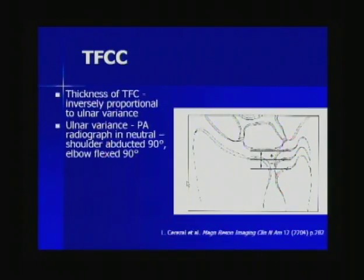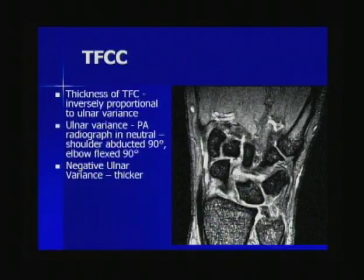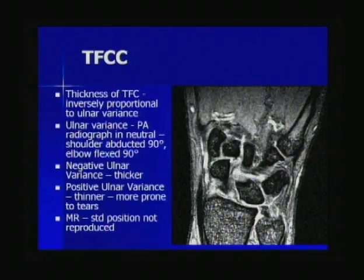The thickness of the TFC is inversely proportional to ulnar variance. Ulnar variance is best determined on radiographs performed in a neutral position with the shoulder abducted 90 degrees and the elbow flexed 90 degrees, and the difference between the distal radial and ulnar articular surfaces is measured. With negative ulnar variance you'll have a thicker TFCC, while with positive ulnar variance the TFC will be thinner and more prone to tears. On MR, be careful not to over-call ulnar positive or negative variance because the position is not reproduced in a standard way.